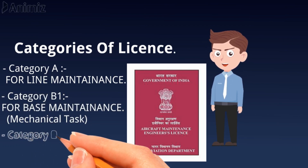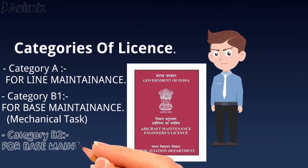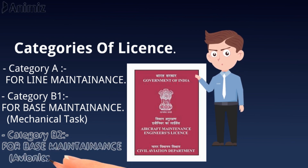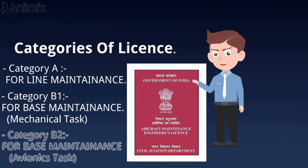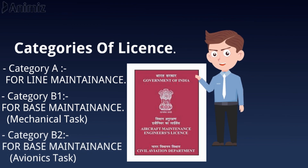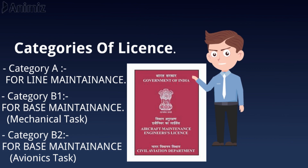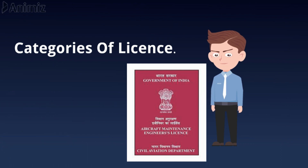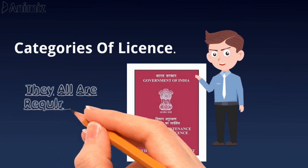Finally, the B2 category license is also for base maintenance, but it covers high-level maintenance of aircraft parts related to avionics, such as communication systems, radar, and so on. Since the work of all these category license holders is very different, they also have to clear different numbers of modules.